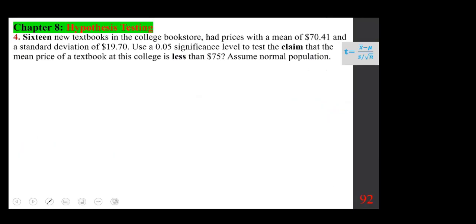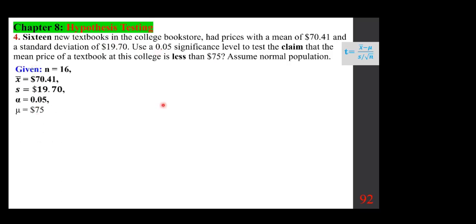16 new textbooks in the college bookstore had prices with a mean of $70.41 and a standard deviation of $19.70. Use a 0.05 significance level to test the claim that the mean price is less than $75. Assume normal population. Given: N = 16, x-bar = $70.41 (from those 16), S = $19.70 (from those 16), alpha = 0.05, mu = 75. In the real world, we almost always deal with a case where sigma is missing.